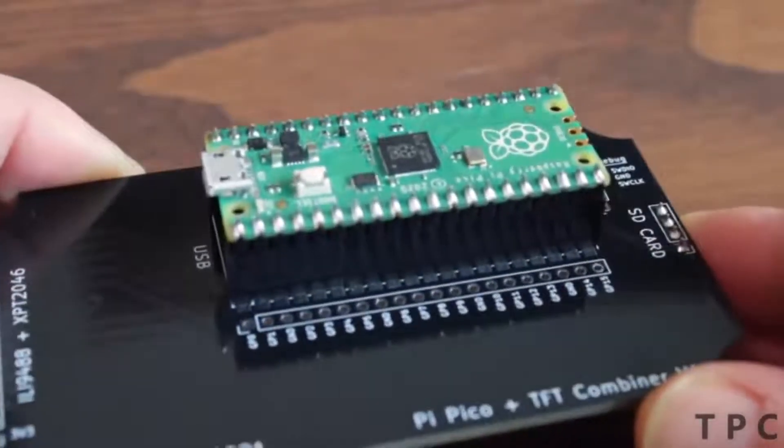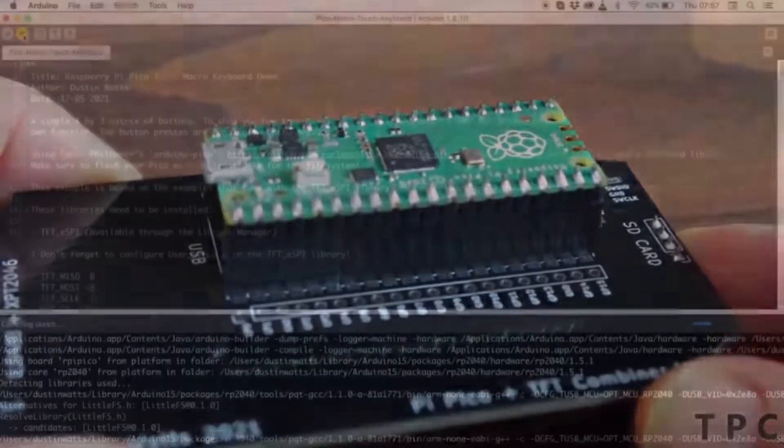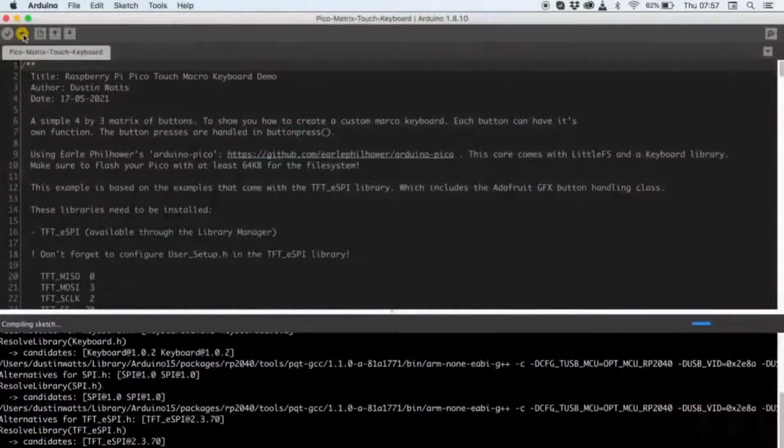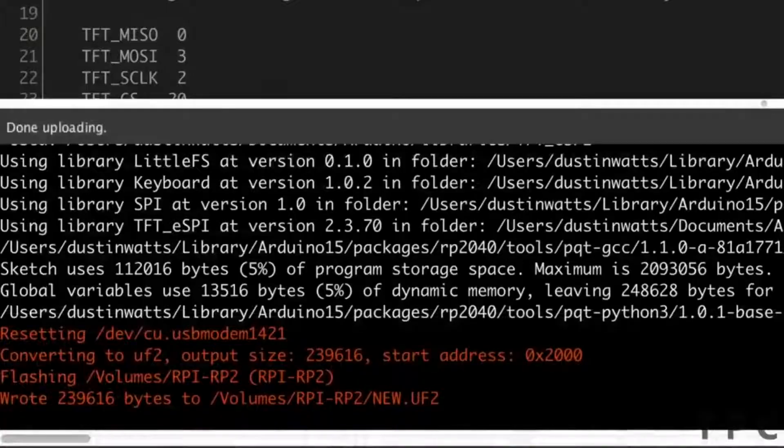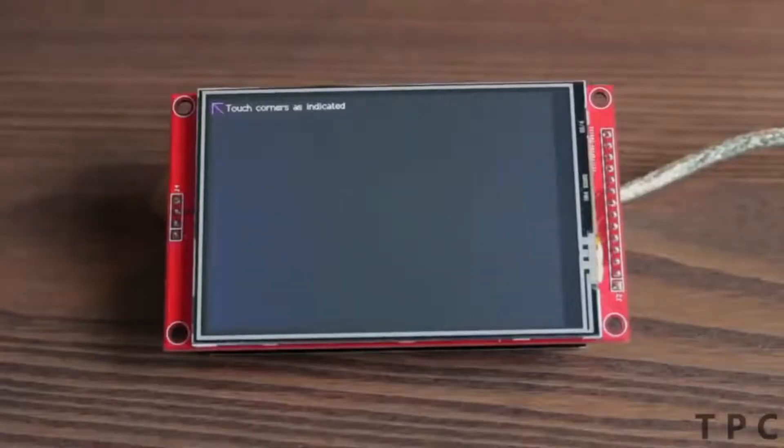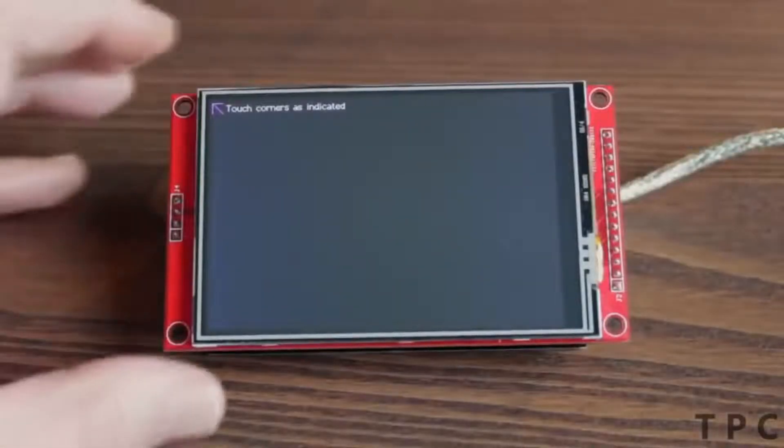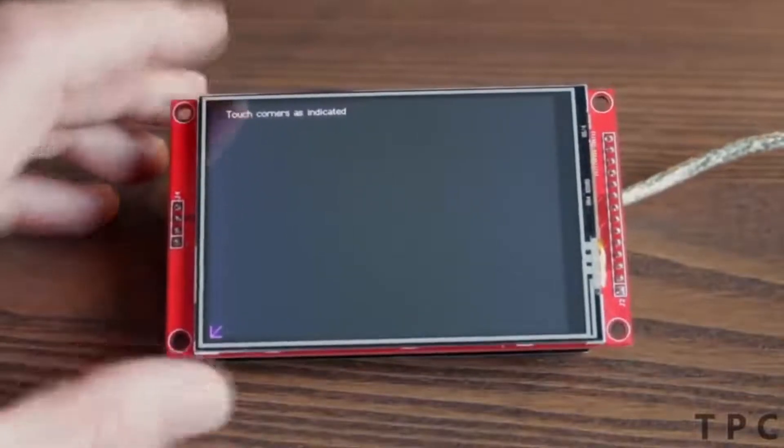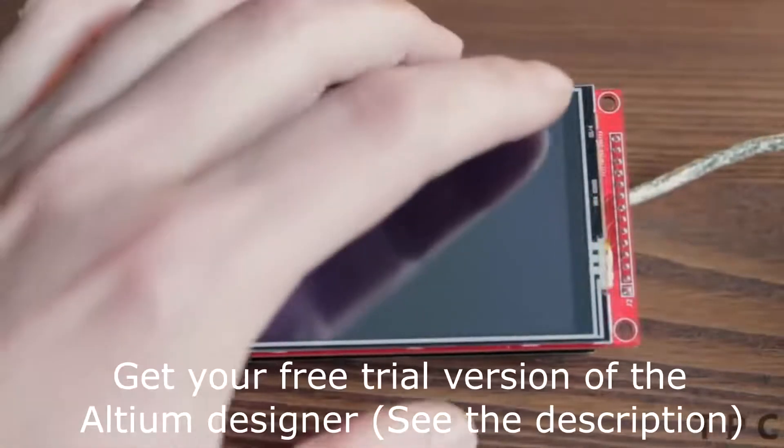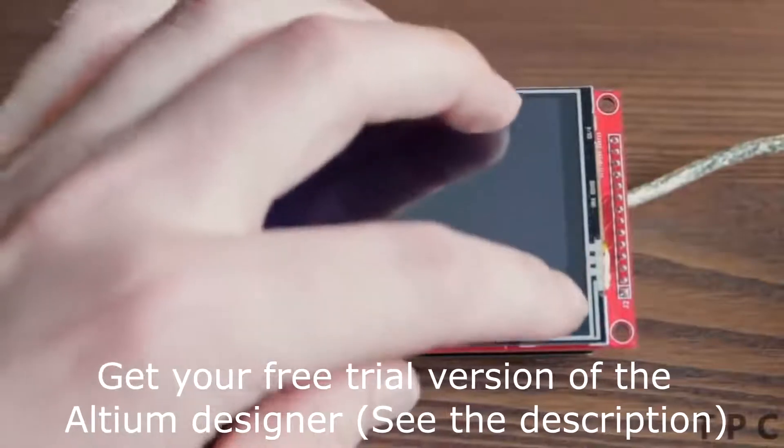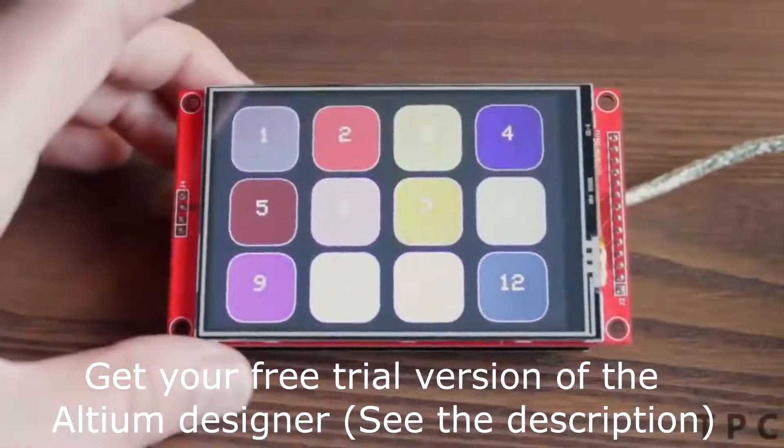Look how beautiful the project looks after the soldering. After compiling and uploading the program to the keypad, the display is ready for calibration for the first time. For calibration just touch the corners of the screen, and after that you are ready to work on your keypad.